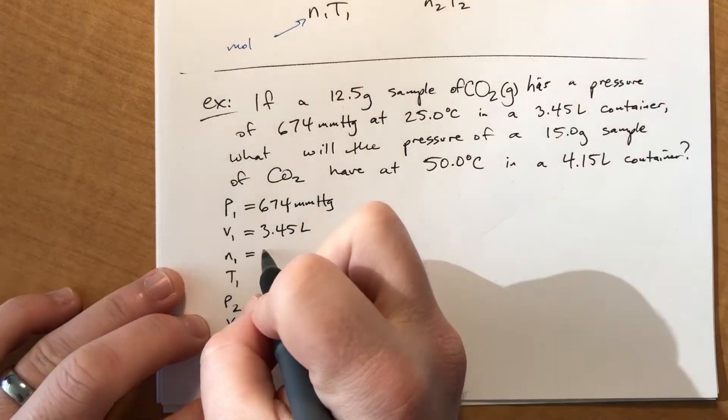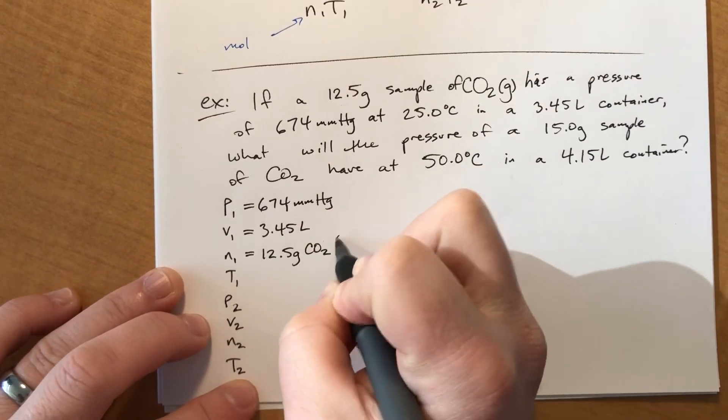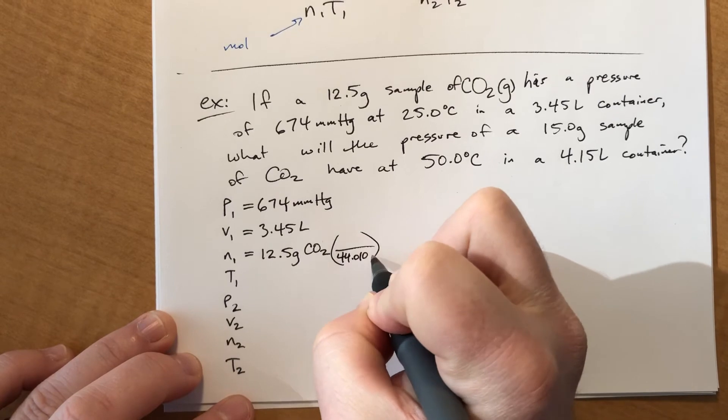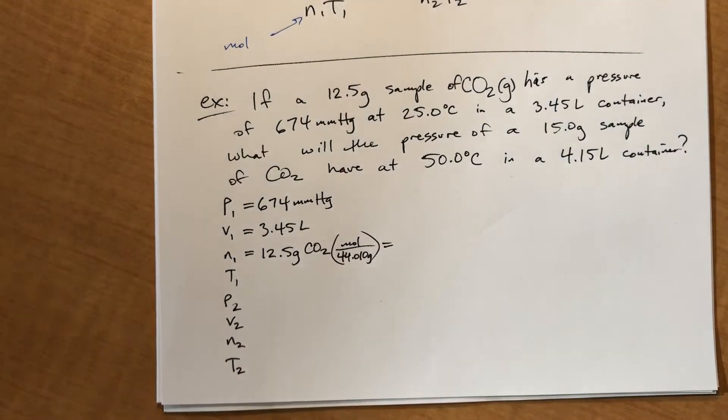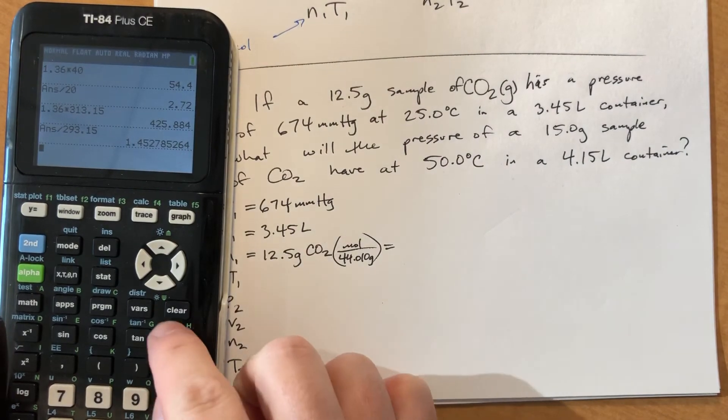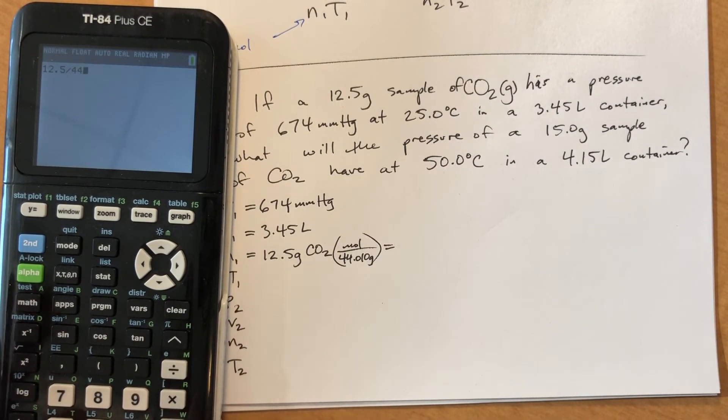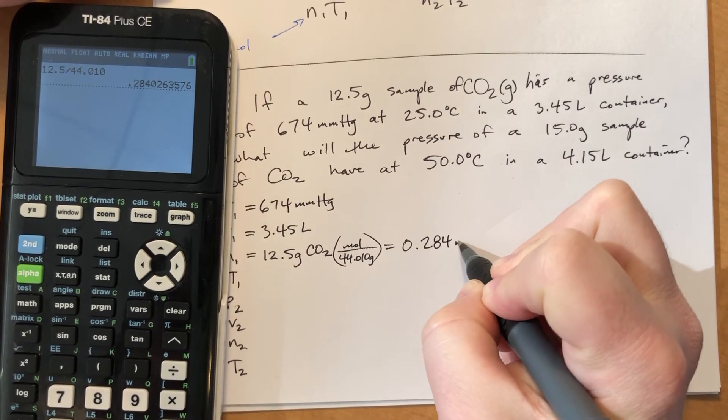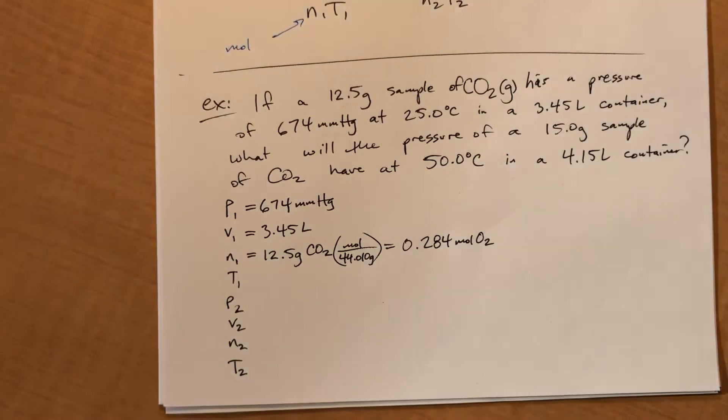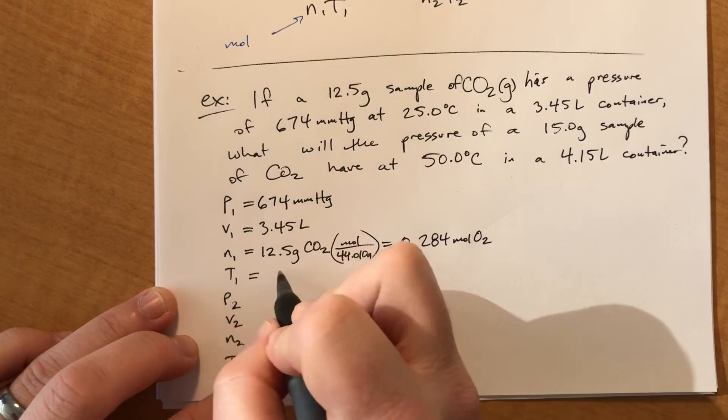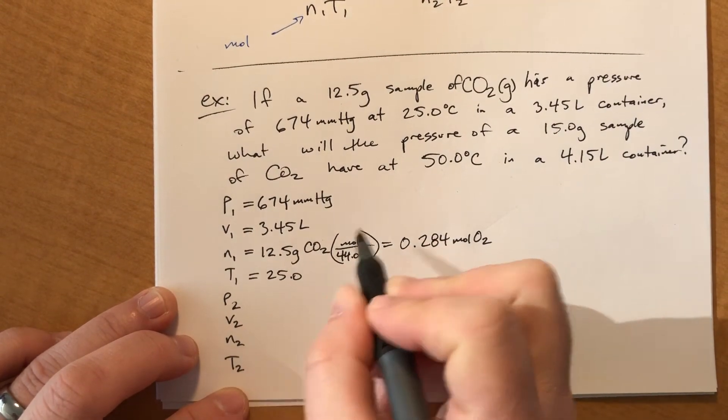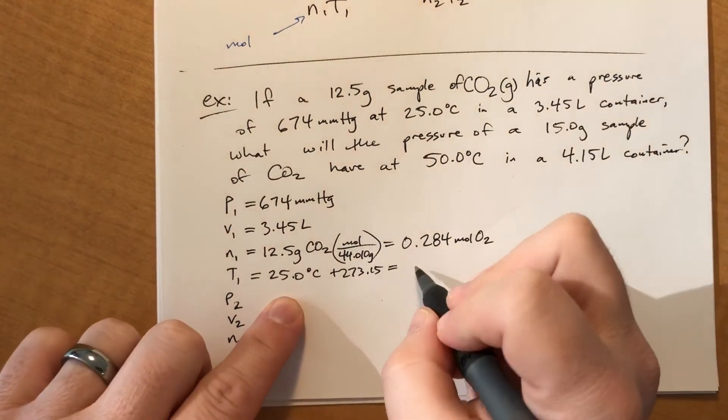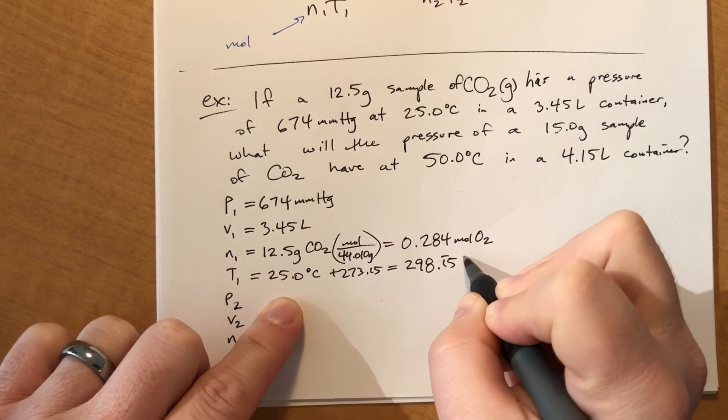N1, we don't have that, but we can get it. We have 12.5 grams of CO2. Using the periodic table, we add up a carbon and two oxygens, and it comes out to 44.010 grams per mole. We can get moles. 12.5 divided by 44.010. That comes out to 0.284 moles of O2. T1 is 25 degrees Celsius, but we need to add 273.15 to get Kelvin. So that would be 298.15 Kelvin.